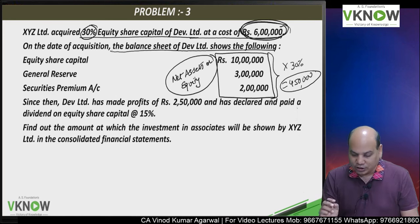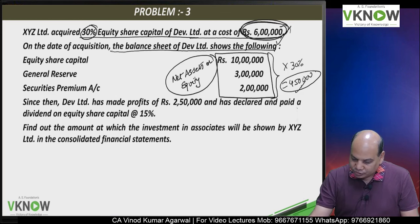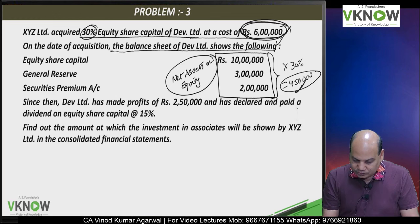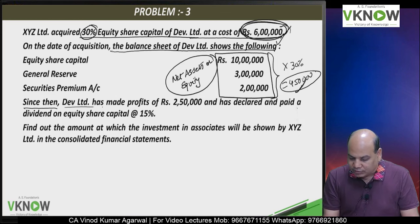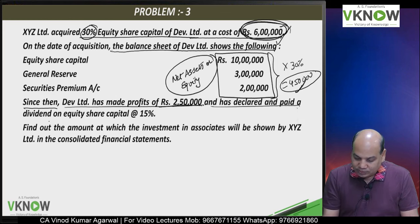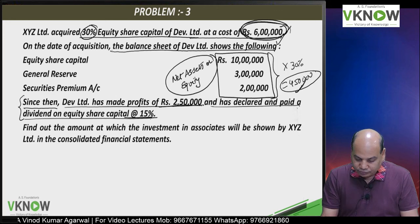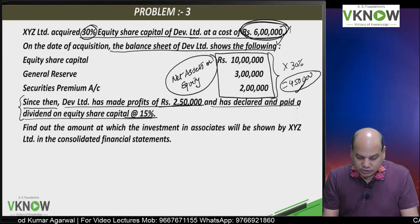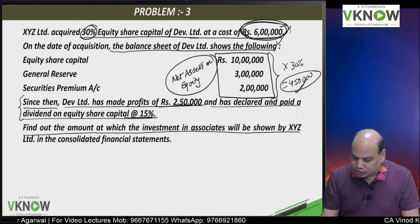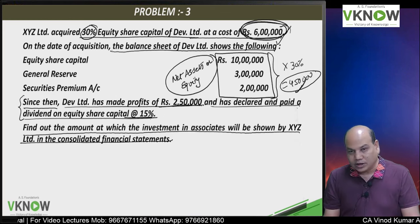At the time of acquisition, we have to compute goodwill: 6 lakh minus share in net asset 4 lakh 50,000. Since then, they have made a profit of 2 lakh 50,000 and declared and paid a dividend at the rate 15 percent. Only in this question goodwill is required. Find out the amount at which investment in associate will be shown in the consolidated financial statement.